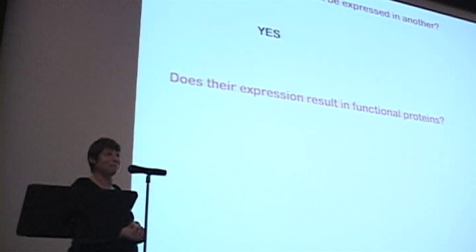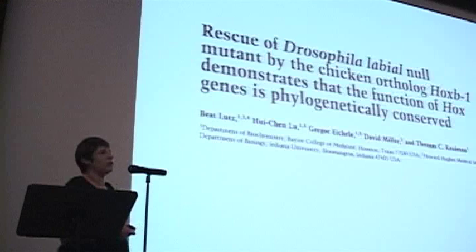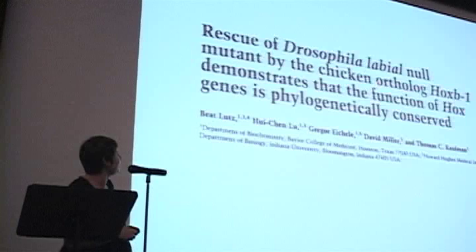So I just want to talk about a few examples of this before you get to move on to the movie. So one example, since we talked about Hox genes, this is a paper that was published in 1996 in which they showed that you could replace a Drosophila Hox gene with the orthologous gene from a chicken. And it would work just fine.